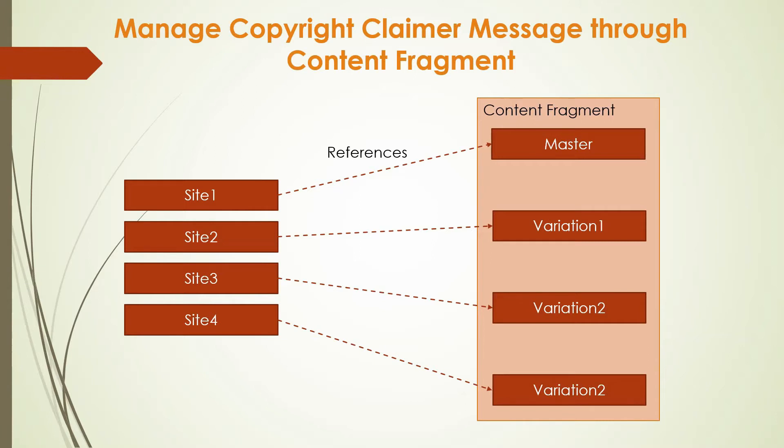In some cases we need a different copyright message or one in a different language — different variations can be created: Variation 1, 2, and 3. Each individual site can then refer to the required variation in the content fragment. Site 1 refers to master, site 2 to Variation 1, site 3 to Variation 2 — that association can be established.